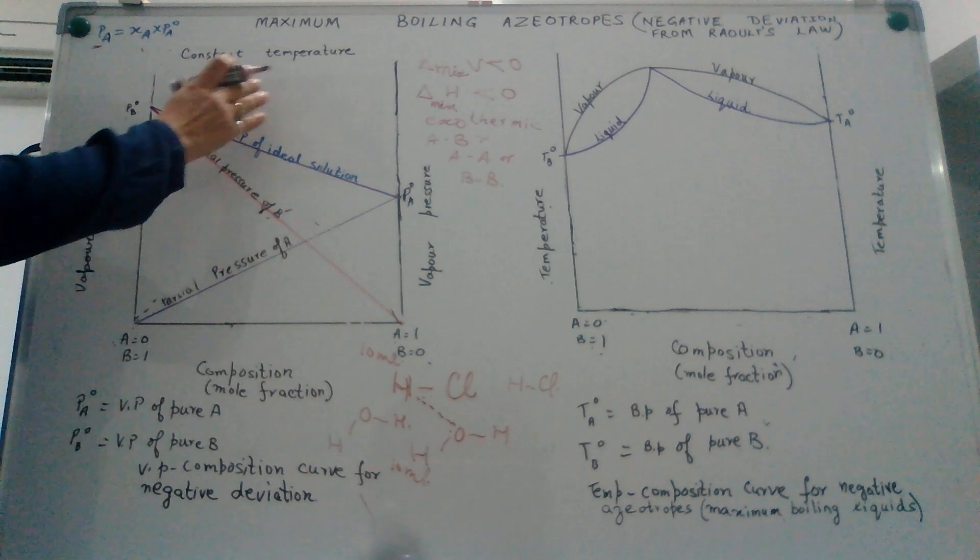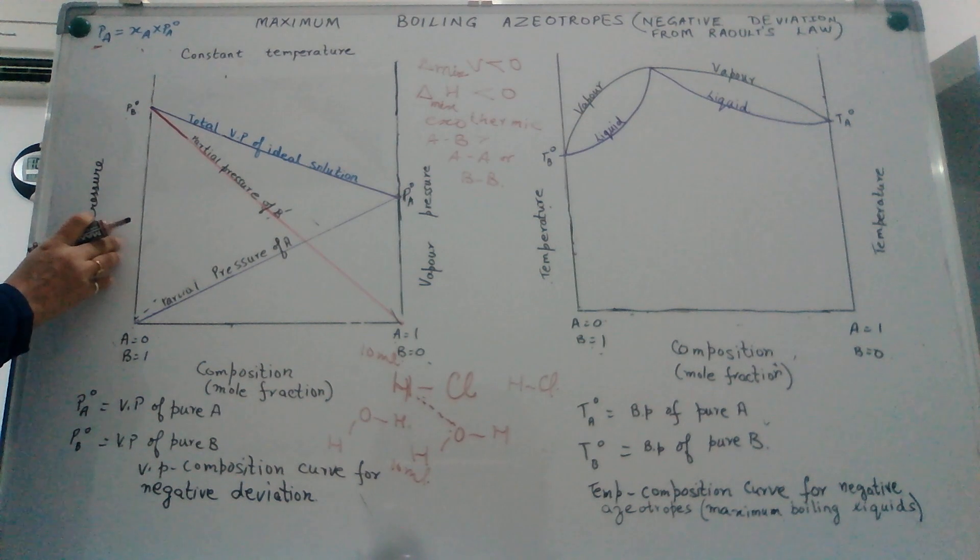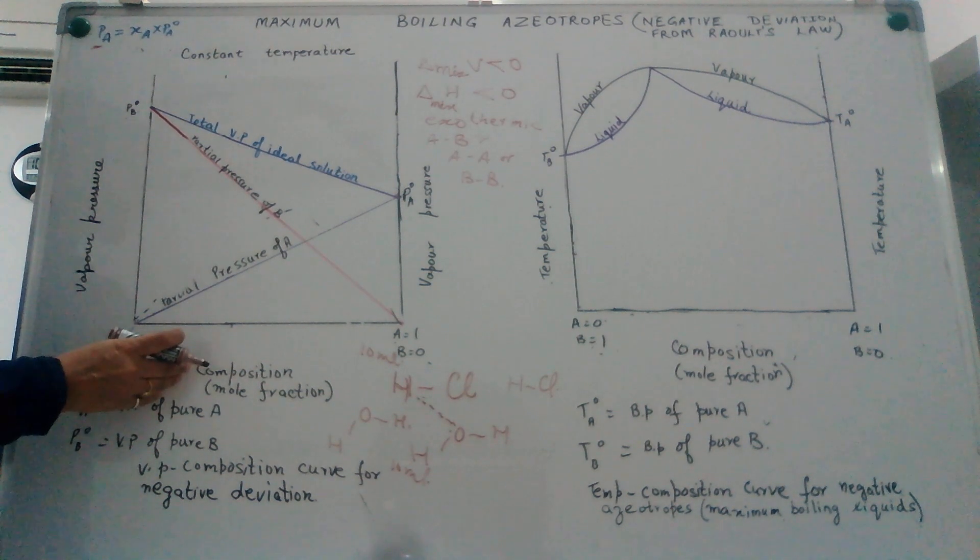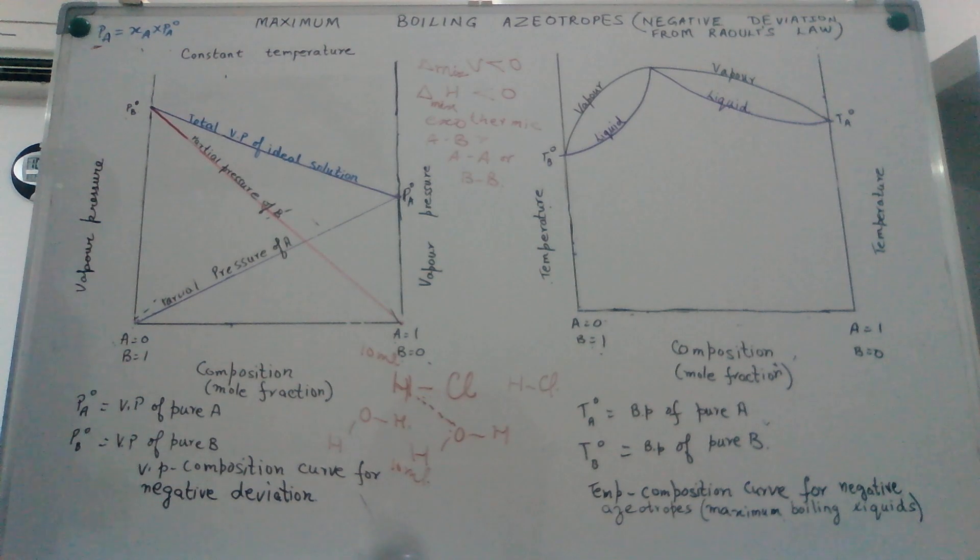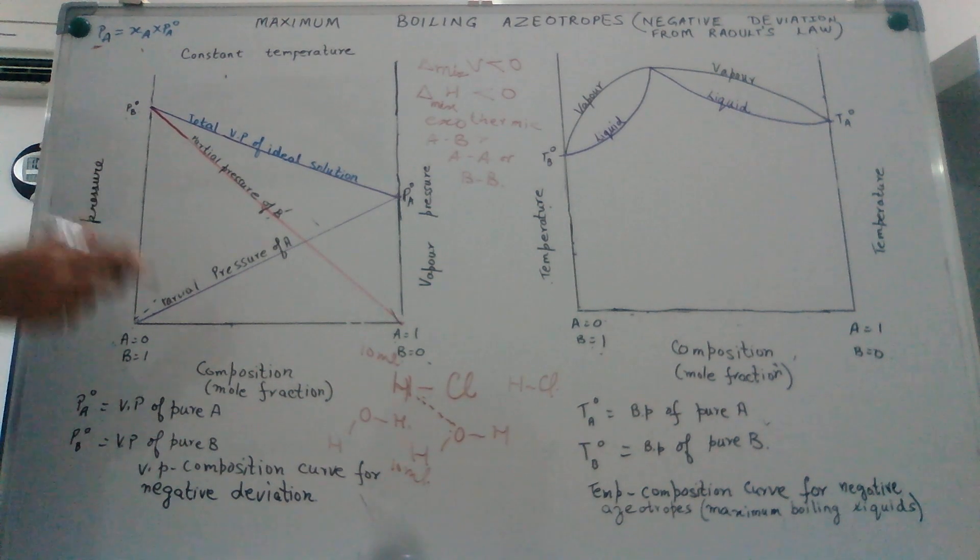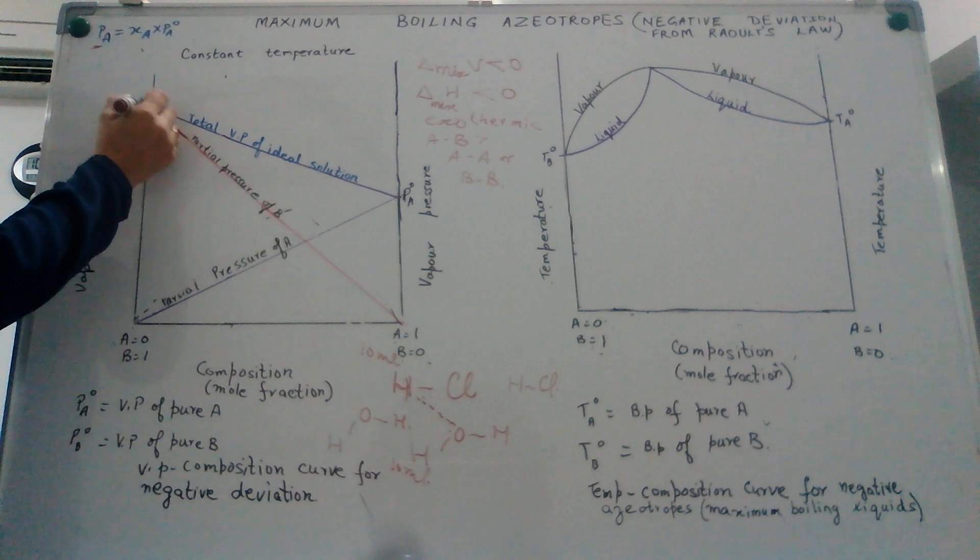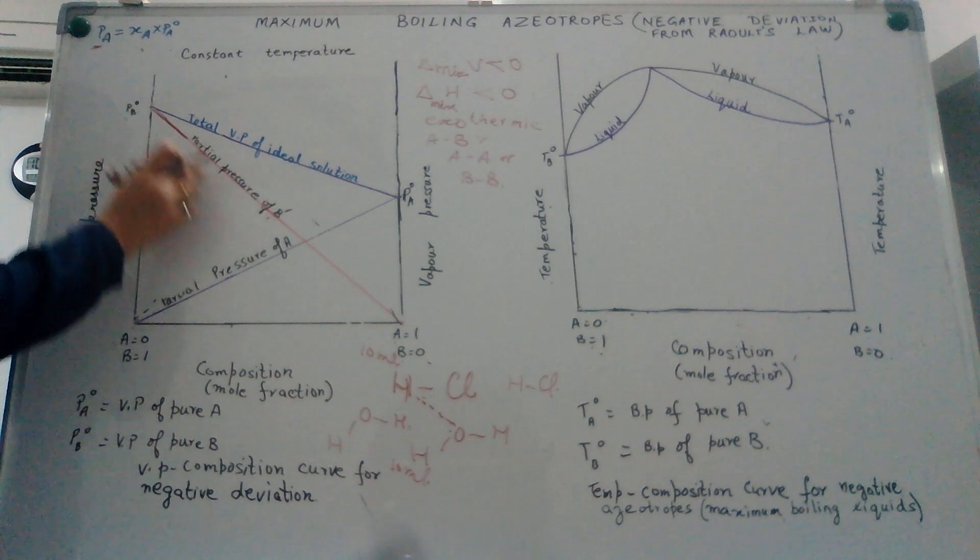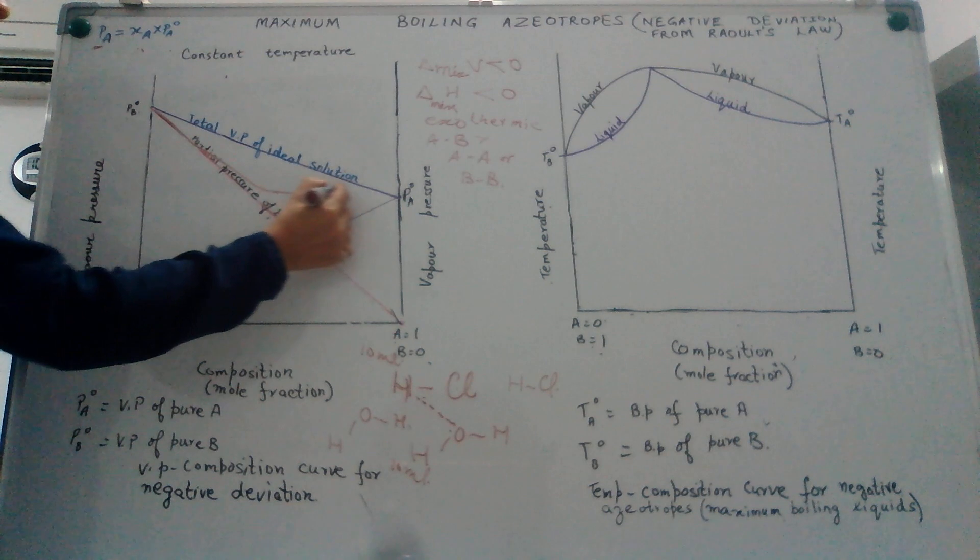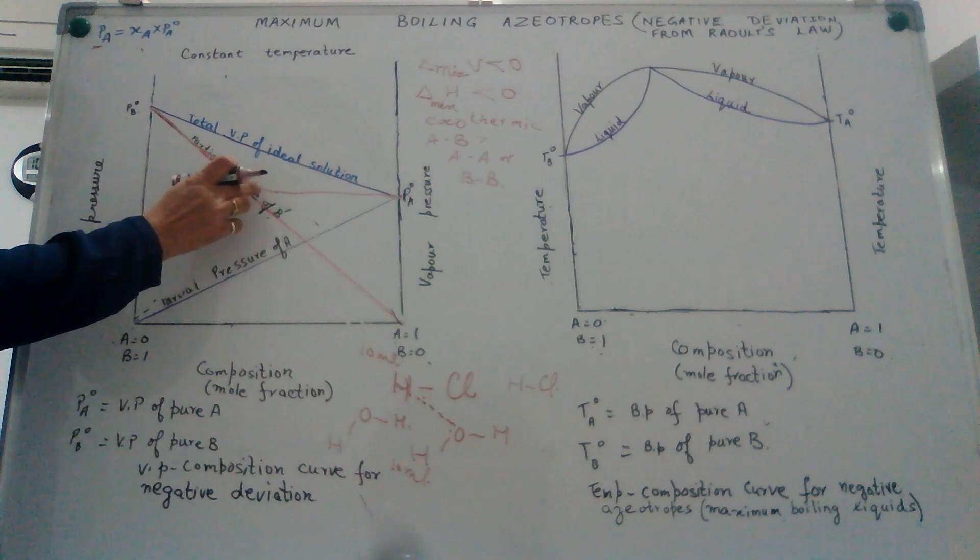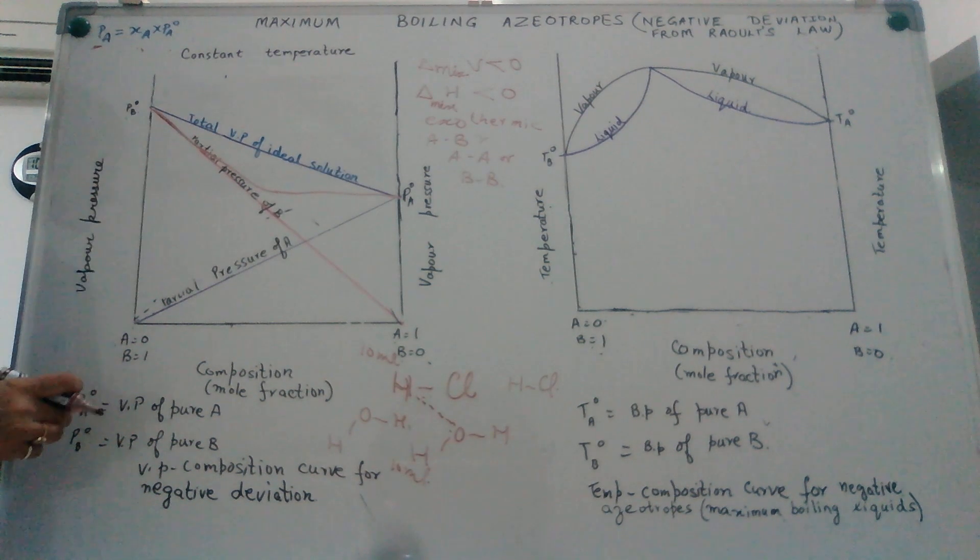We have the vapor pressure composition curve for an ideal situation drawn here where we have constant temperature. Vapor pressure denoted on the y-axis. Composition in terms of mole fraction denoted on the x-axis. This graph is for an ideal situation. What happens when we have a solution which is showing negative deviation from Raoult's law? Our total vapor pressure will show a dip from its ideal behavior. And at a certain composition, the vapor pressure of the mixture is actually lower than the vapor pressure of each of the components involved.